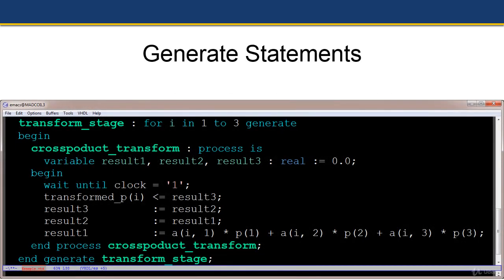You can see here transform_stage: for i in 1 to 3 generate. Between the generate and the end generate, that's created basically three times, each one with i equal to 1, then 2, then 3. It ends up creating three processes, each one has its